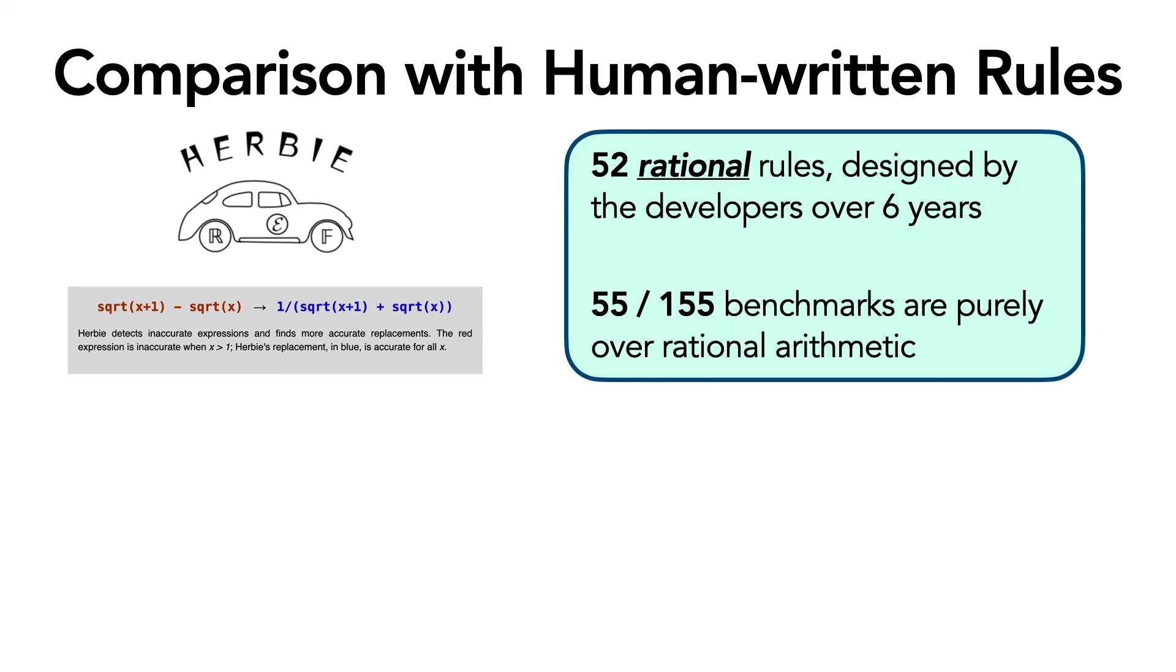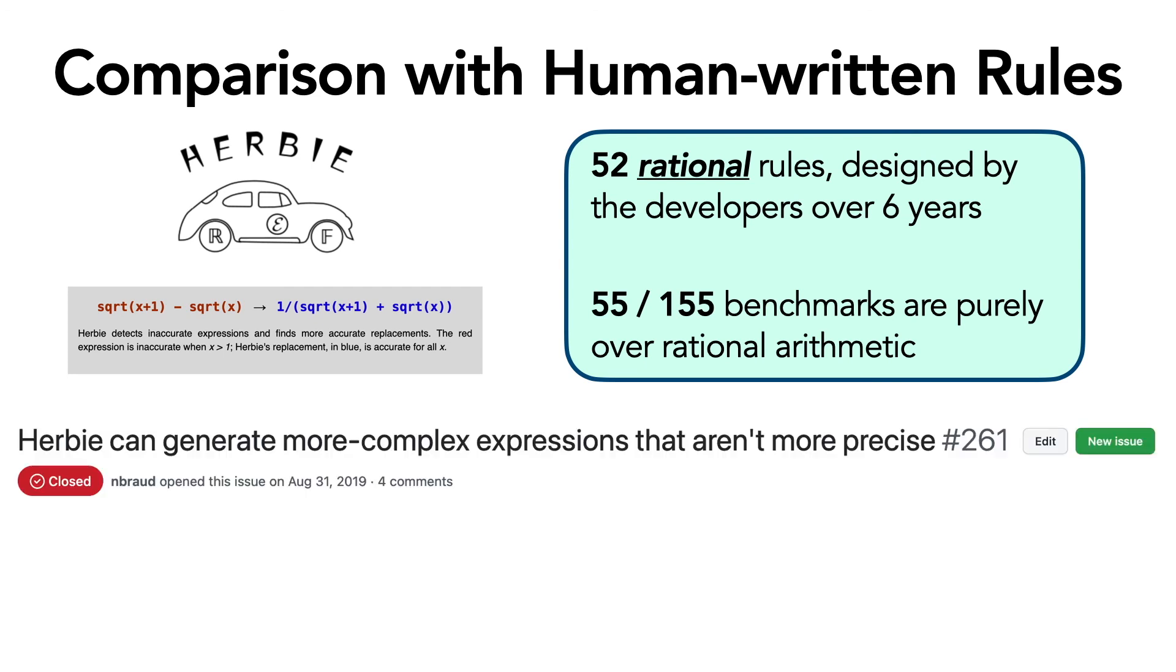So for this part of the evaluation, we focused only on the rational rule set of Herbie. Herbie also supports rules over reals and fixed point, but those are ongoing work for us. So Herbie's original rule set had 52 rules over rationals, which were designed by the developers over the past six years. And even though the Herbie rule set is fairly stable and well designed, if you look at the Herbie repo, you'll find that there are several issues from users that are about missing rules or incorrect rules.